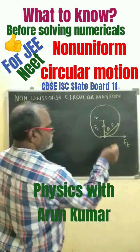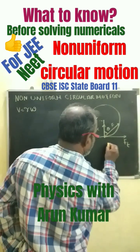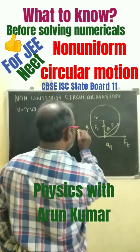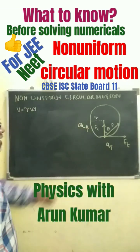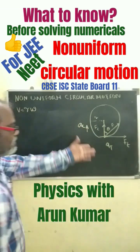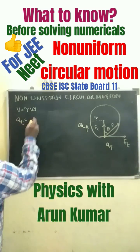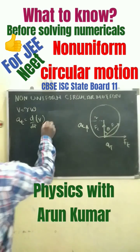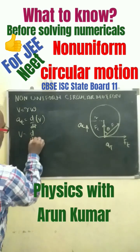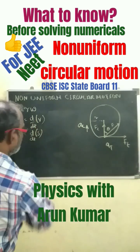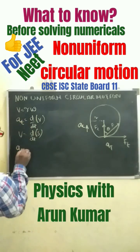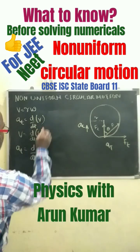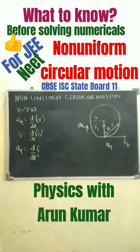At any instant t, we have tangential acceleration as well as centripetal acceleration. The tangential acceleration, a_t, is given by dv/dt. Since v equals ds/dt, where s is the arc length, we can write a_t equals d²s/dt².